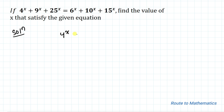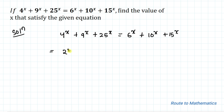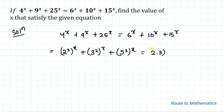We have given 4 to the power x plus 9 to the power x plus 25 to the power x equals 6 to the power x plus 10 to the power x plus 15 to the power x. In the next step, I can write 4 to the power x as (2 squared) to the power x, similarly 9 as (3 squared) to the power x, and 25 as (5 squared) to the power x. On the right side, 6 can be written as (2 times 3) to the power x, 10 as (2 times 5) to the power x, and 15 as (3 times 5) to the power x. Basically, in this step I have done the prime factorization of each base.